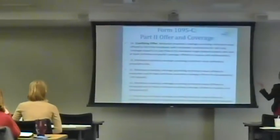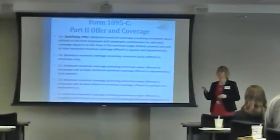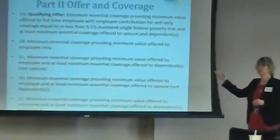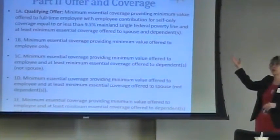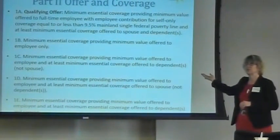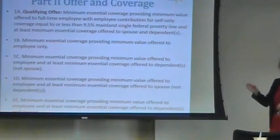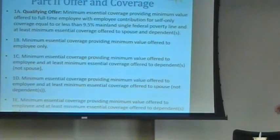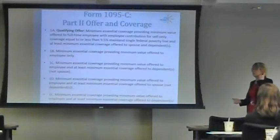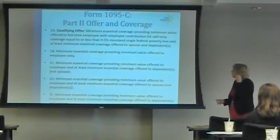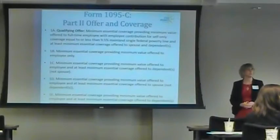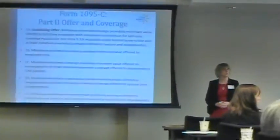You're allowed to use 1C — you just have to make sure it's cut properly. For example, if you're on a major plan year and the first half of the calendar year you offered to spouses, you might be 1A for the first half. Then if you carve spouses out the second half, you're down to 1C — so you wouldn't be able to use the all-12-months box. If you offer coverage to spouses only when they don't have their own coverage elsewhere, that's still going to be 1A.